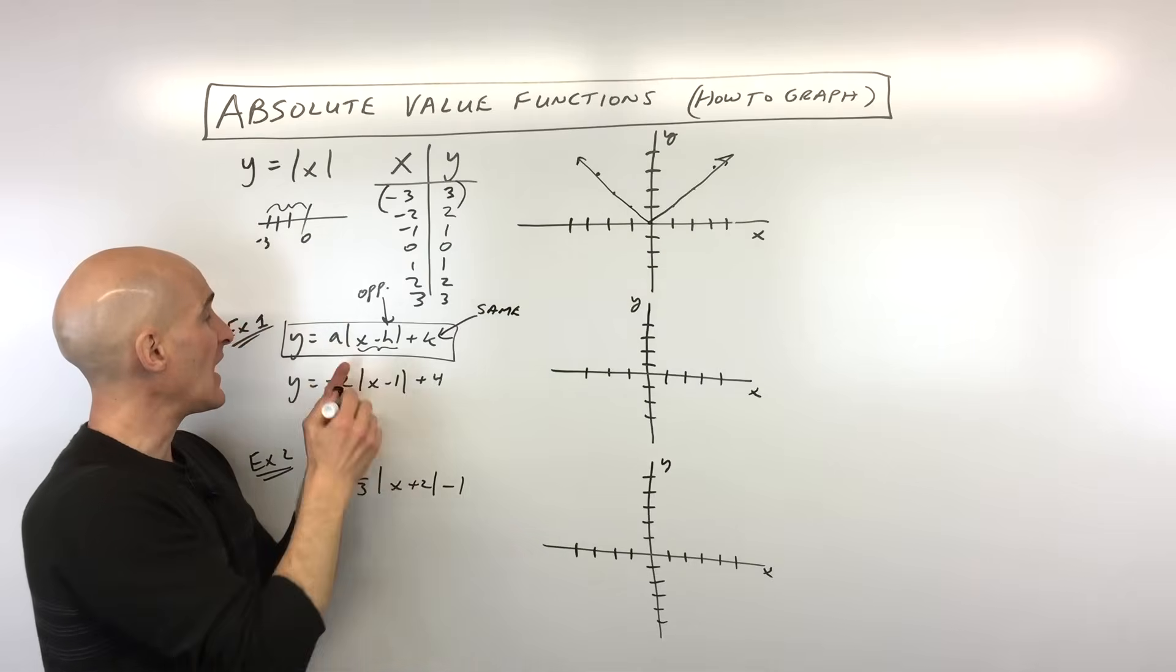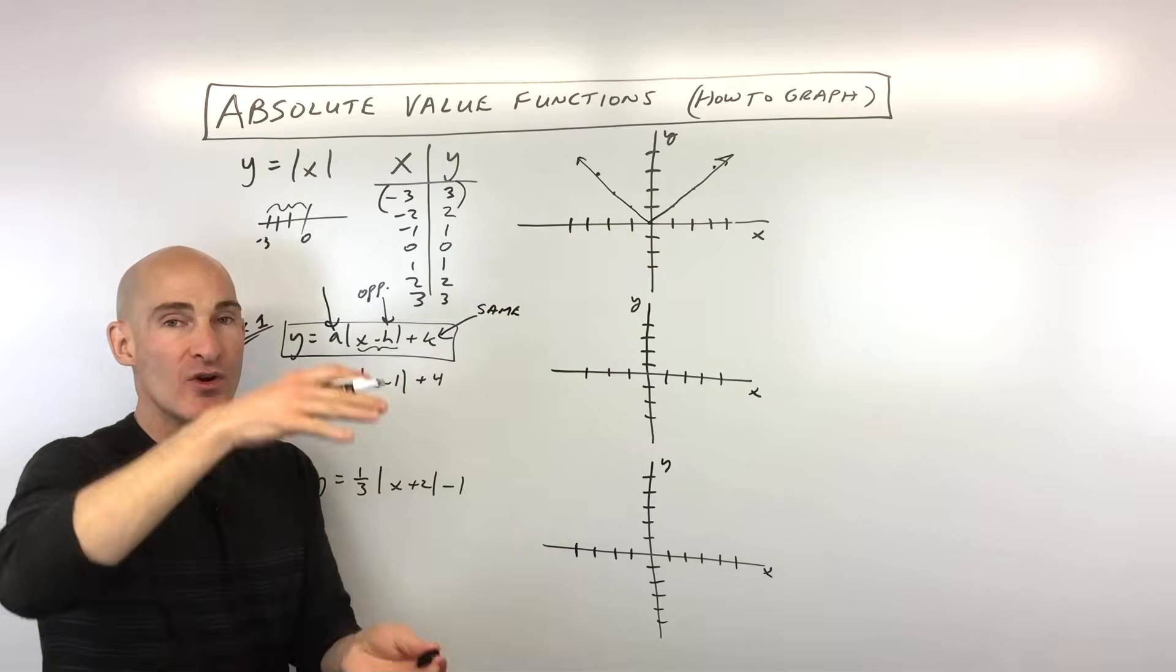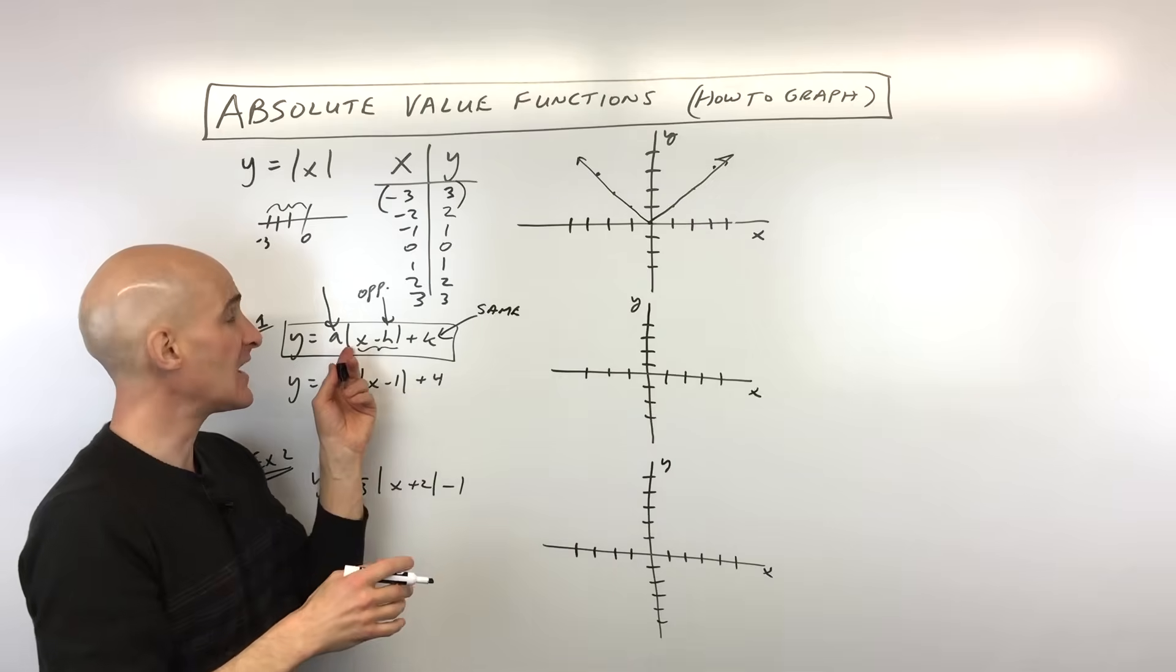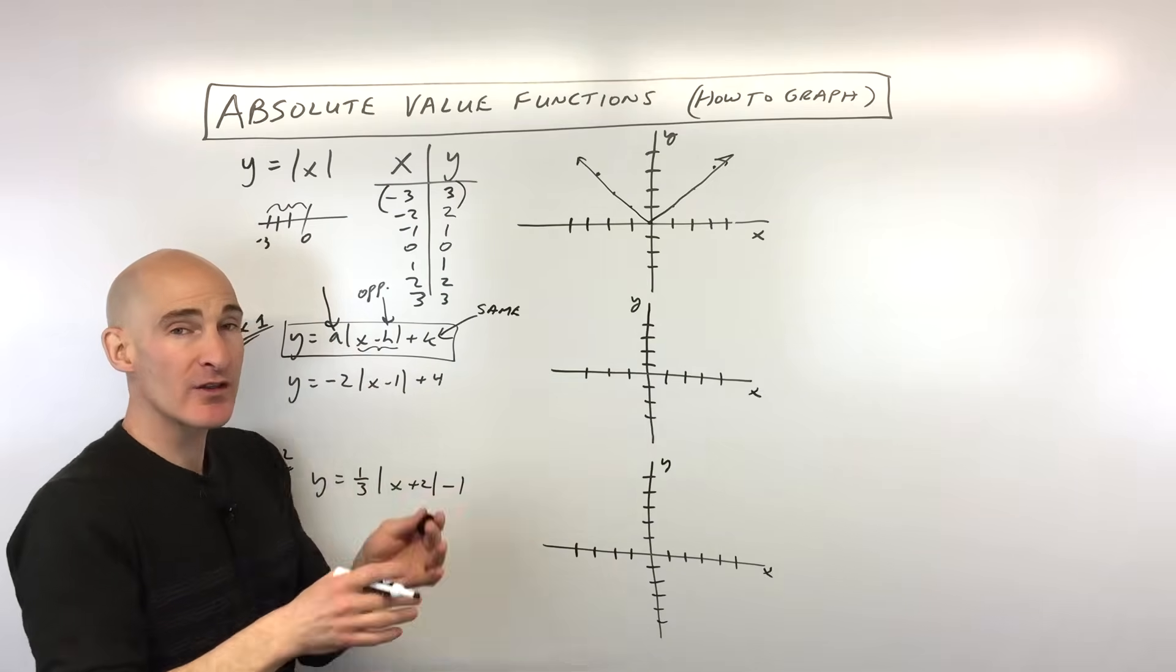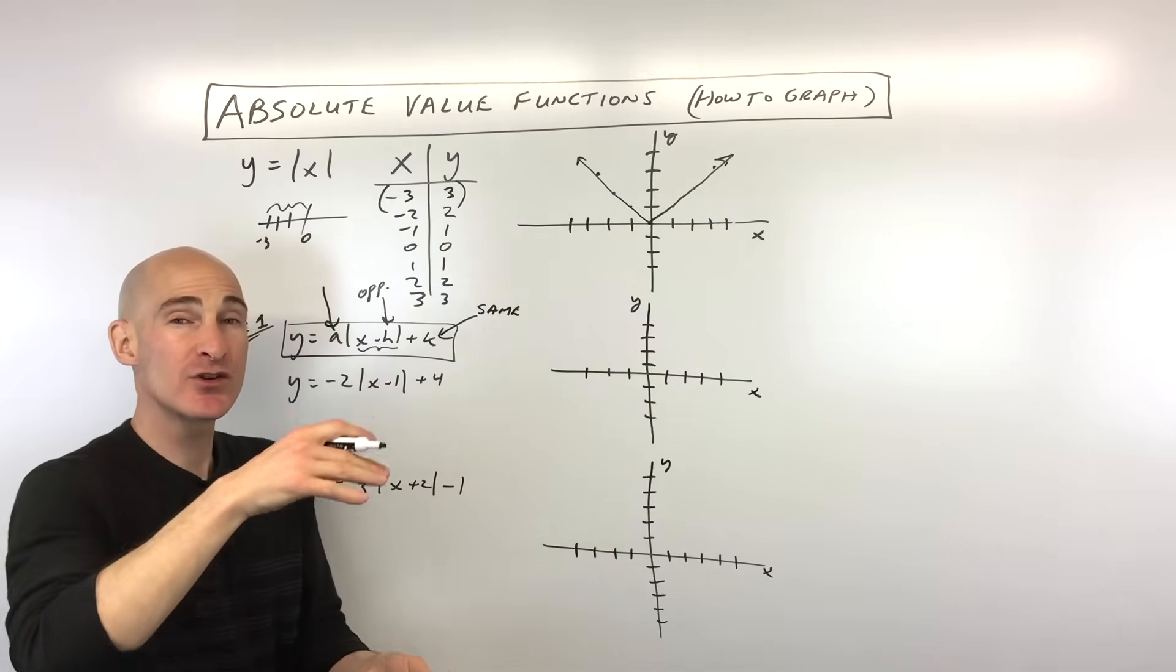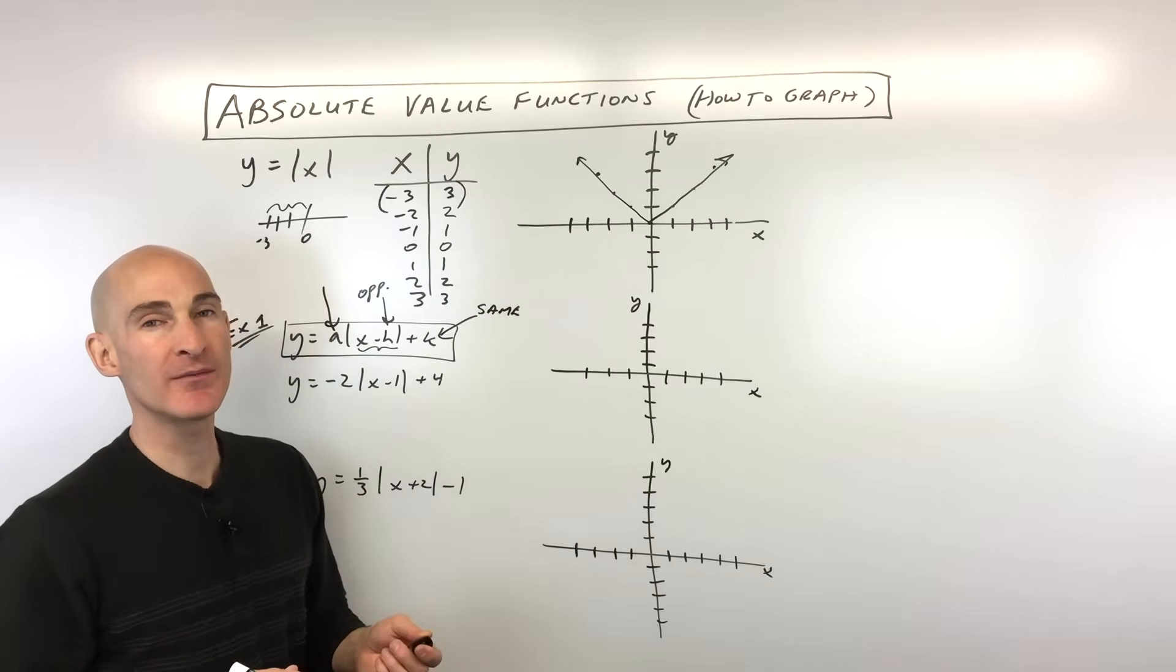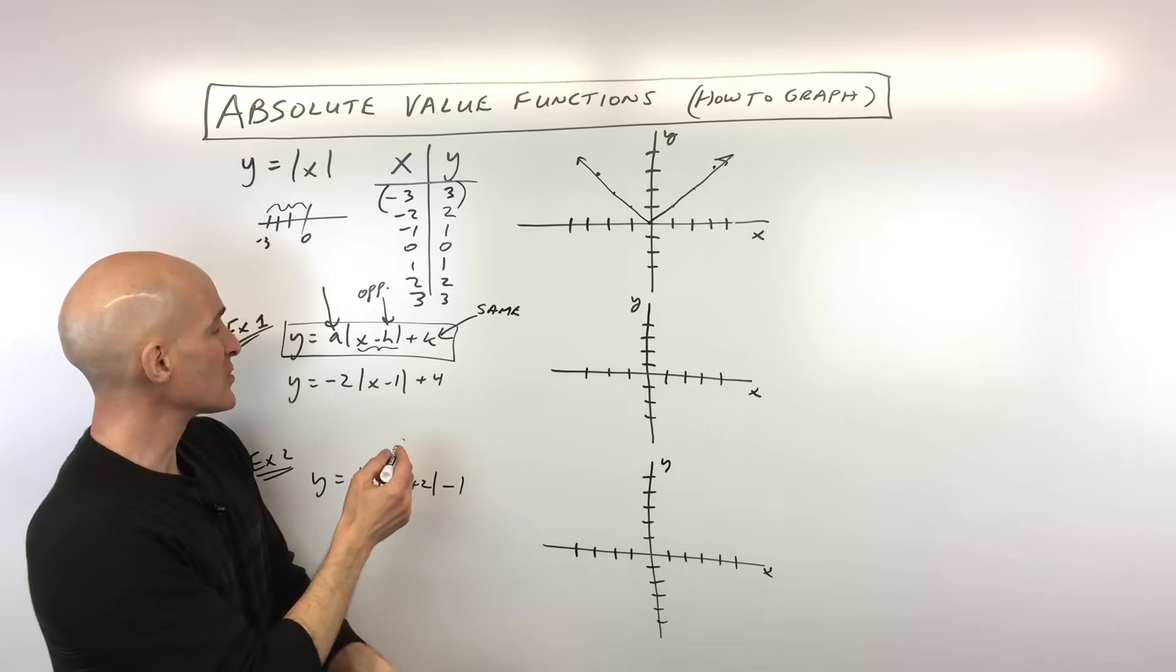Then what the a value does is it stretches the graph or compresses the graph. And if it's negative, what it'll do is it'll reflect the graph over the x-axis. If a is greater than 1, it's a vertical stretch. If it's between 0 and 1, like a half, it's a vertical shrink. Let's take a look at some examples so you can see how this works.